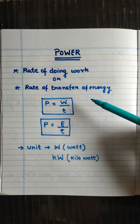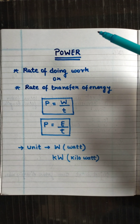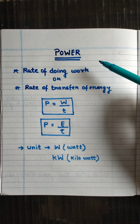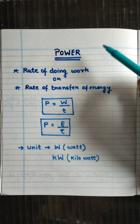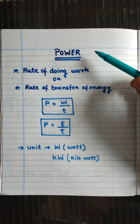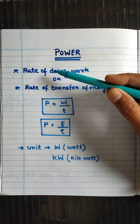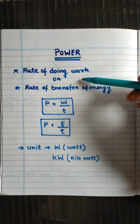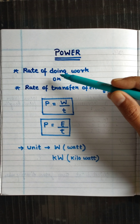We are discussing about the power of machines like cars, motorbikes, and different types of machines. Power is the speed of work done — how fast or how slow the work is done. The speed of work done is called power. The rate of doing work — how fast or how slowly the work is done — that rate of doing work is called power.